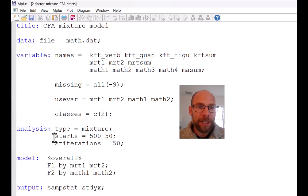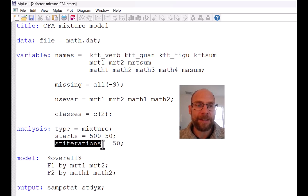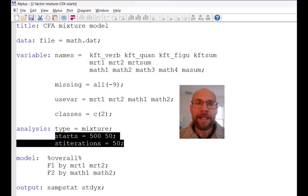Furthermore what is special about this is that here I included two subcommands in analysis that refer to starting values. You can see there's first of all the starts command that here specifies starts equals 500 50, and then there's also a command that's called stiterations that specifies 50. And so why is this included here? This is a setting that is a little bit more conservative so to say than the Mplus default when you specify a factor mixture model or other type of latent class model.